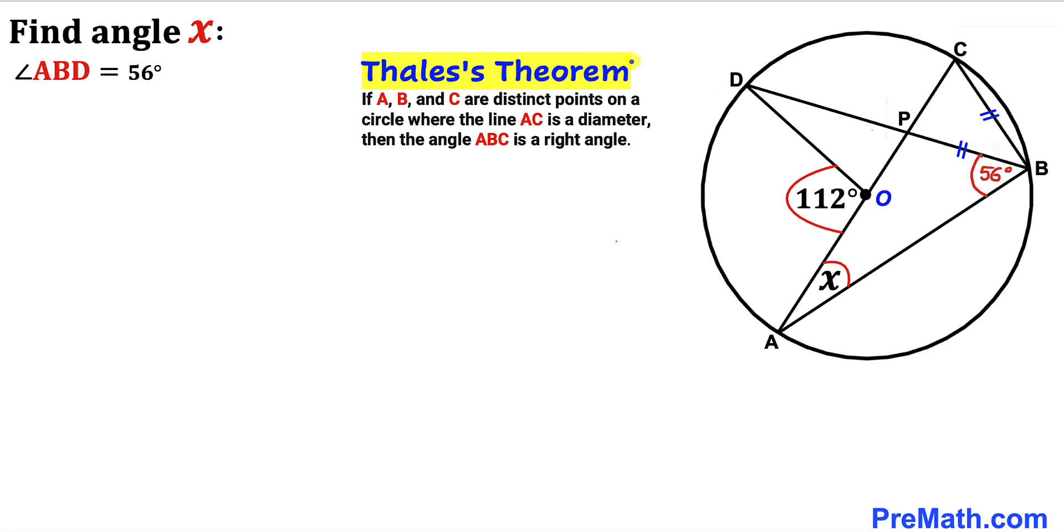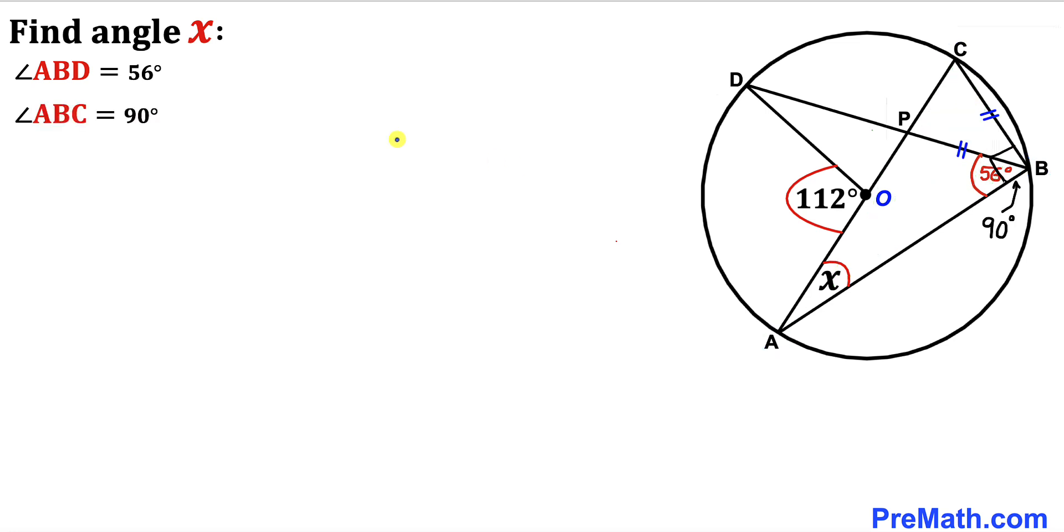Now let's recall Thales' theorem. According to this theorem, as long as the three vertices of triangle ABC are on the circle and AC is a diameter, then angle ABC is 90 degrees. So angle ABC is 90 degrees, and we now know this is our 90-degree angle and this is our 56-degree angle.